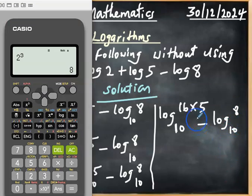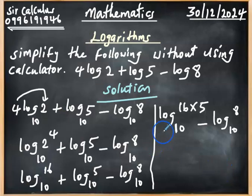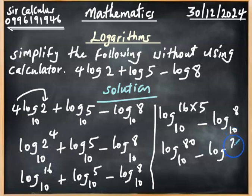So we have 16 times 5. 16 times 5, we get 80. So we have log 80 base 10, minus log 8 base 10.